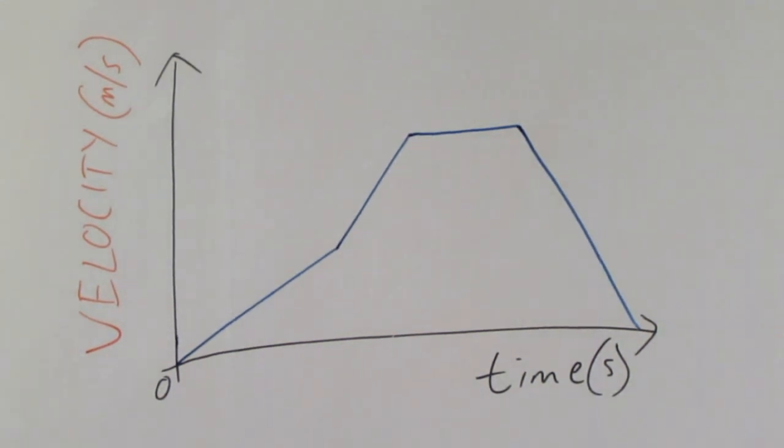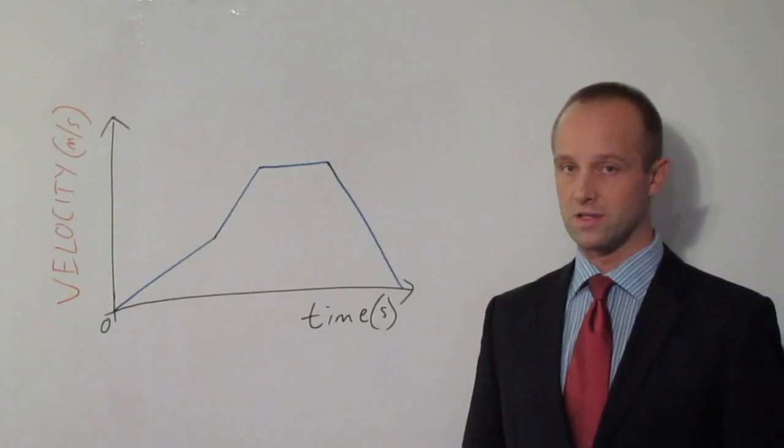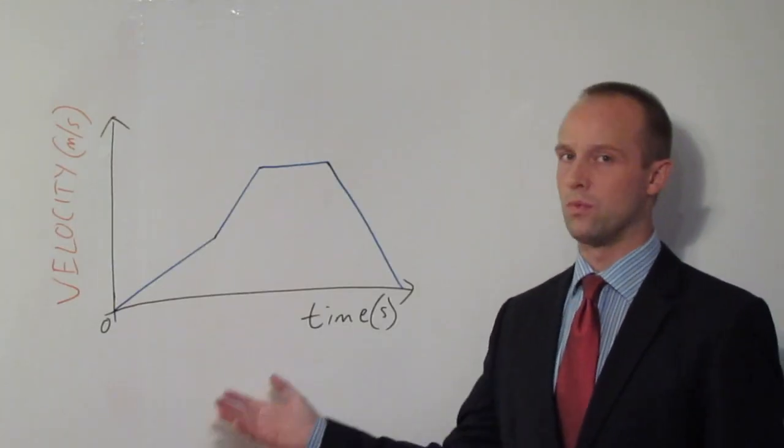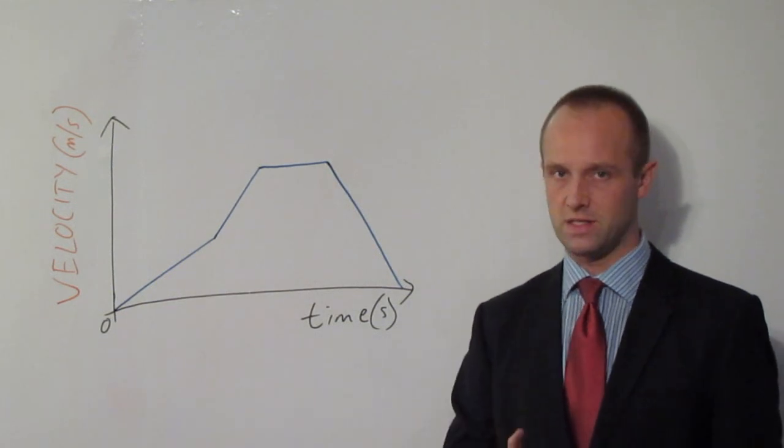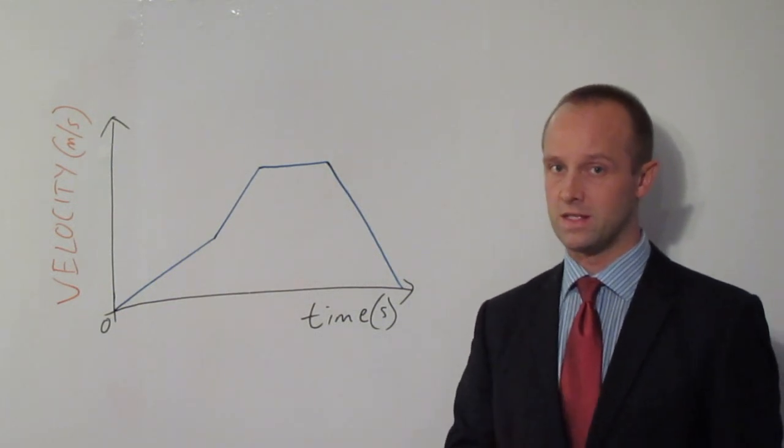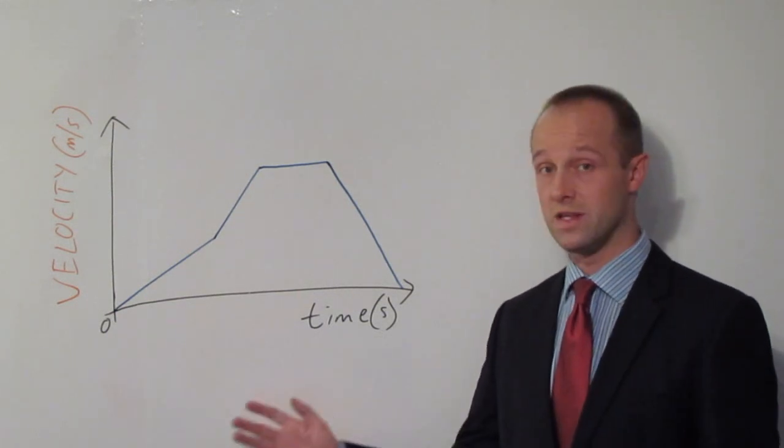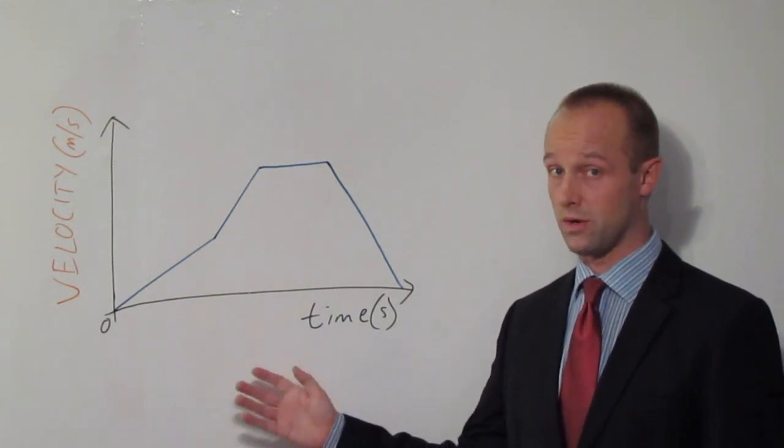And the good news again on this: to get that C you don't need to calculate those gradients. You aren't going to need to work anything out. To get the higher grades you need to be able to work out those gradients, but to get your C you don't need to worry about that. So that's all you need to know about velocity-time graphs. You need to be able to describe what this object is doing, but you don't need to put any numbers on it. You don't need to calculate gradients. You don't need to calculate how far it's gone. You just need to be able to describe what's going on.